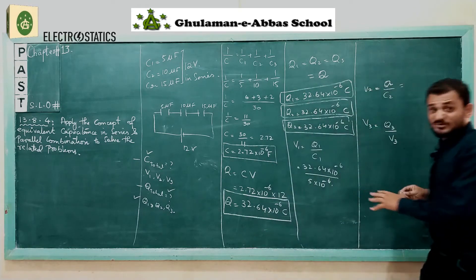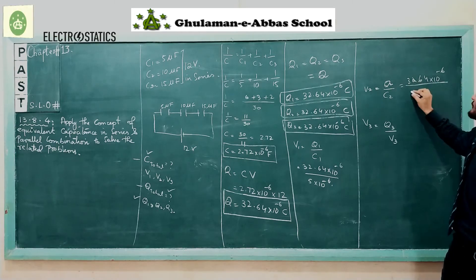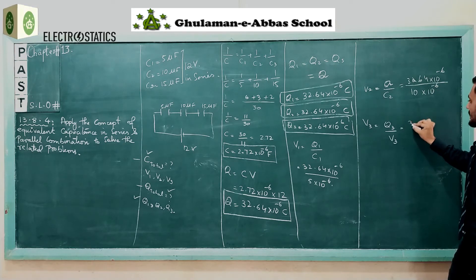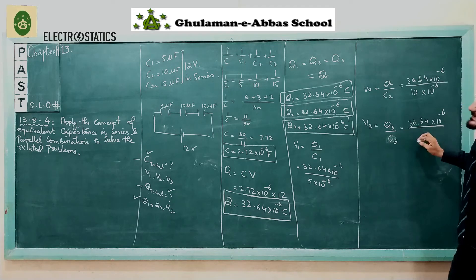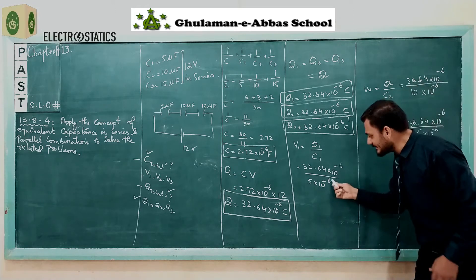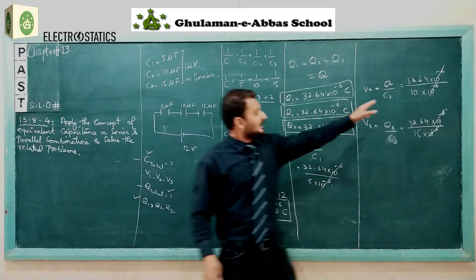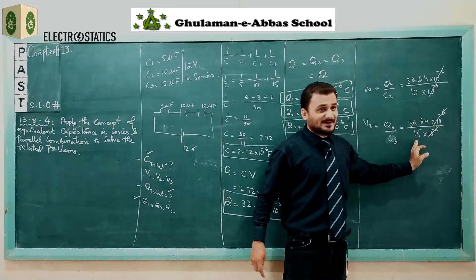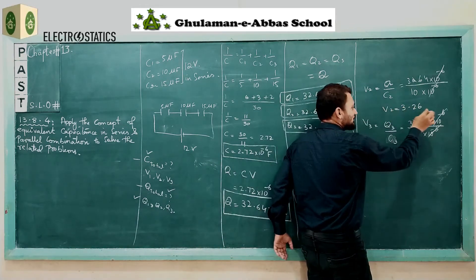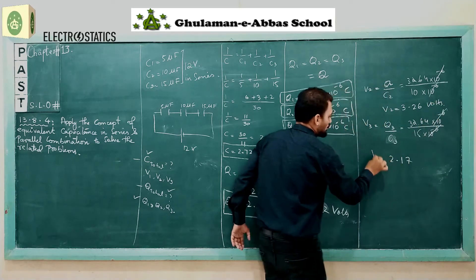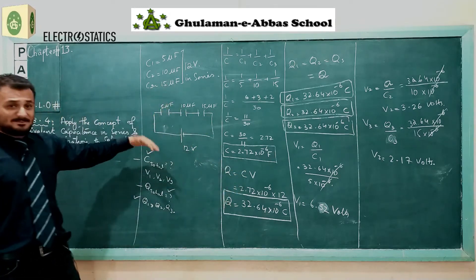Since the 10⁻⁶ exponents cancel out, we simply compute: 32.64 ÷ 5, 32.64 ÷ 10, and 32.64 ÷ 15. After division, V1 = 6.52 volts, V2 = 3.26 volts, and V3 = 2.17 volts. So we have calculated all the variables for the series combination. Now we will use the same data but solve for the parallel combination.